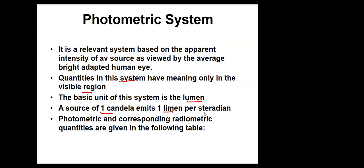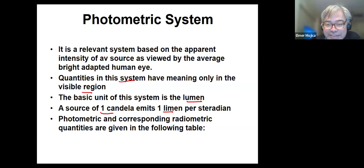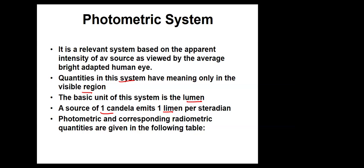One lumen is defined in terms of the standard candela. The luminous intensity from a candela is 1/60 of the luminous intensity of blackbody radiation. A source of one candela would emit 1 lumen per steradian.